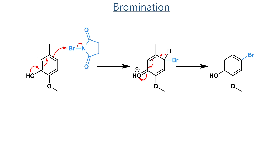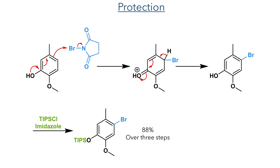Taking this forward, the ring was then brominated using NBS, an electrophilic brominating reagent that is attacked by the position para to the hydroxyl group. A proton is then eliminated to restore aromaticity and complete the bromination. In the next step, the hydroxyl group was protected using TIPS chloride and imidazole, forming the product in an 88% yield over three steps.